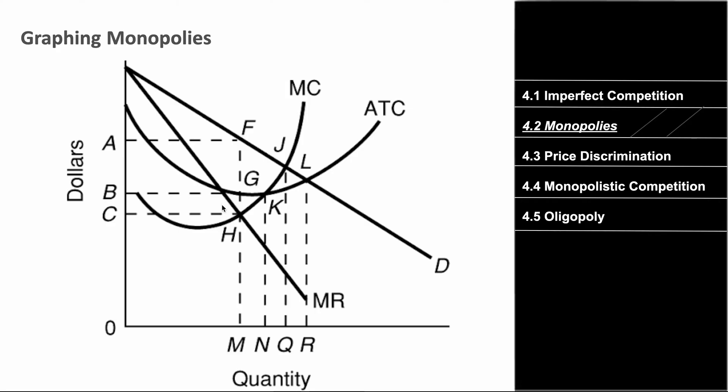Profit maximizing still applies with MR equals MC. This rule doesn't change across market structures — if a company wants to maximize their profit, they set MR equal to MC.